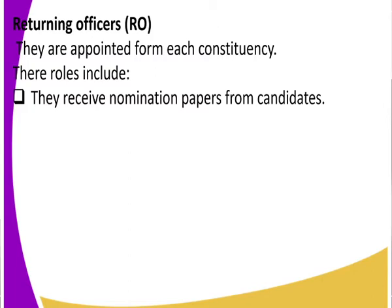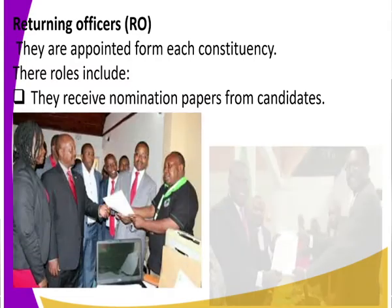Their first role is to receive nomination papers from candidates. For a candidate to be declared as running for a political seat, they must be certified by IEBC. They must submit their nomination papers, let IEBC verify who they are, and from that they receive confirmation from IEBC that they are running for a political seat. So the first function of returning officers is to receive nomination papers from candidates.